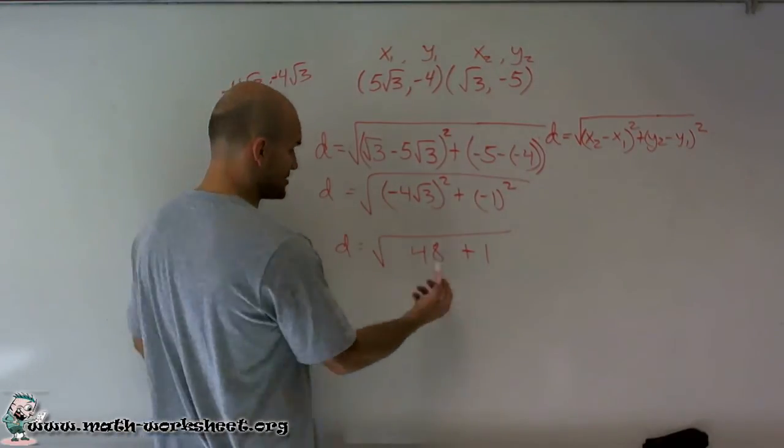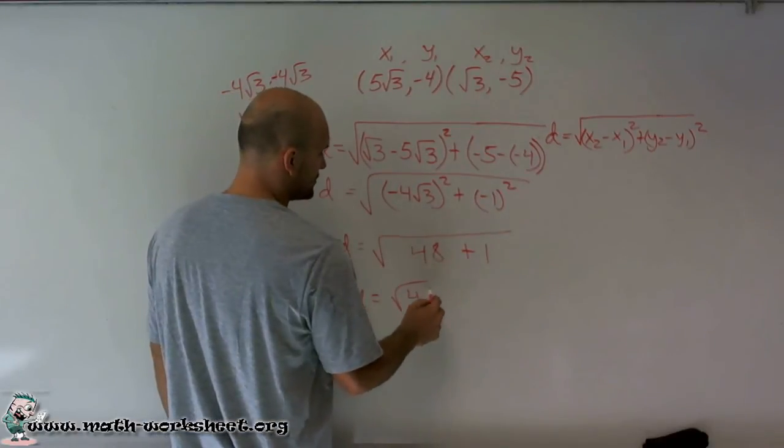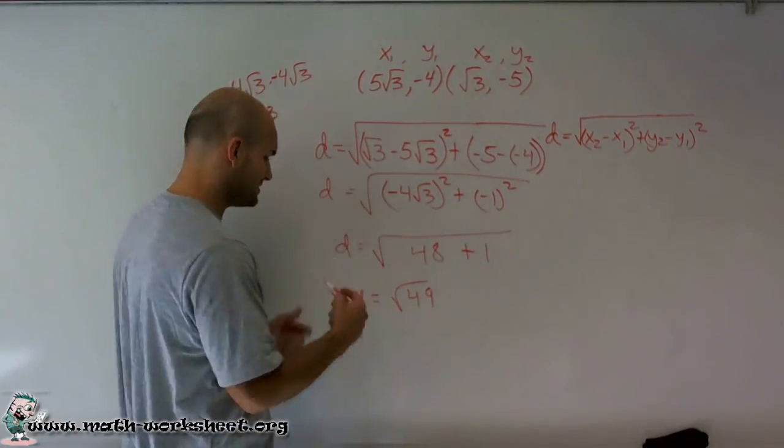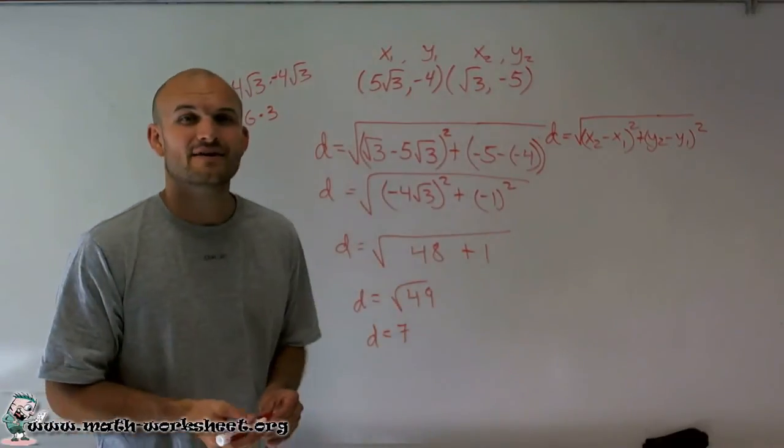Then, under a radical expression, I can add them or combine them. So I get the square root of 49, then take the square root of 49, our distance is going to be a positive 7.